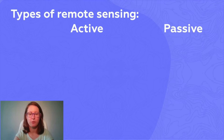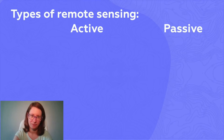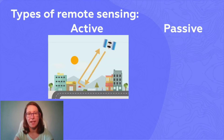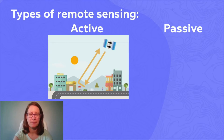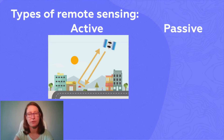There are two types of remote sensing: active and passive. Active is basically a radar — it emits light or radio waves and detects the reflected radiation.